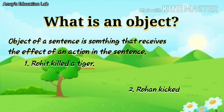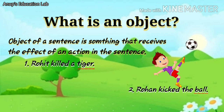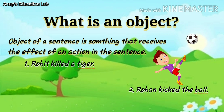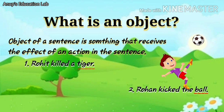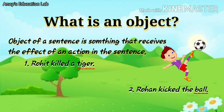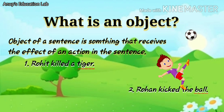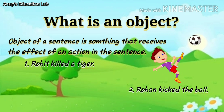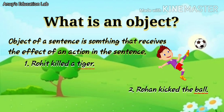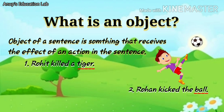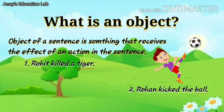Rohit kicked the ball. Here, ball is the object as the ball receives the effect of the action performed by Rohit. So, here, when Rohit does an action of a kick, the ball which was stationary once rolls. Rolling is the effect on the ball.